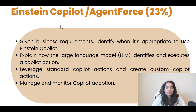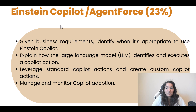So under this topic, what are we going to learn? The first important thing is we are going to understand the business requirement and identify when it is appropriate to use Einstein co-pilot. There are different tools that are available, and when is the requirement in which we are going to use Einstein co-pilot — that is the first objective of this section.